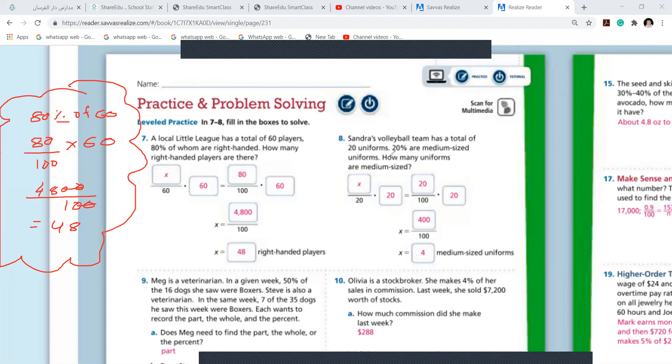Now here, Sandra's volleyball team has a total of 20 uniforms. 20% are medium-sized uniforms. 20% of 20 uniforms are medium-sized. That means 20 over 100 times 20, you get 400 over 100 and your answer is 4 medium-sized uniforms.